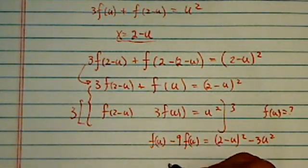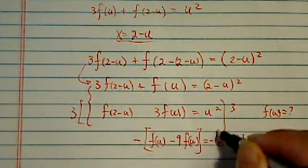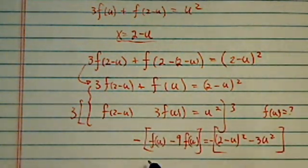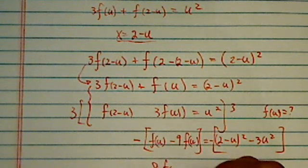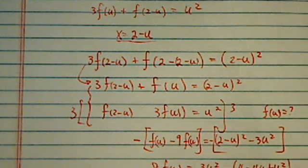And unlike this one, I'm going to reverse it, so I'll put a minus sign here, a minus sign here, for the whole thing. So then I have 8f(u) is equal to 3u² minus this thing squared, which is 4 - 4u + u².